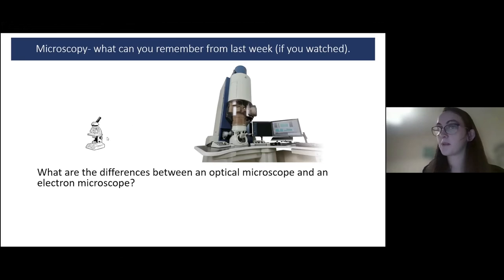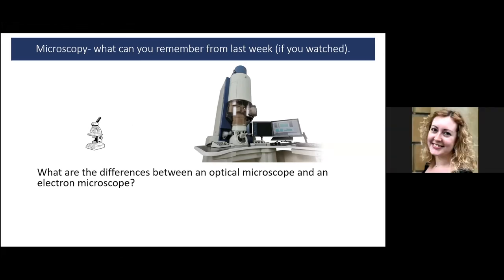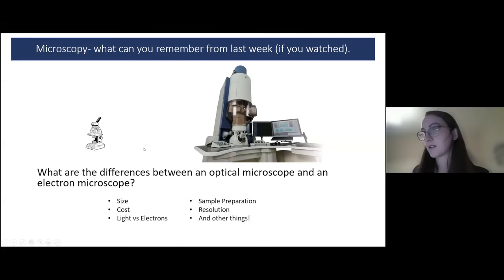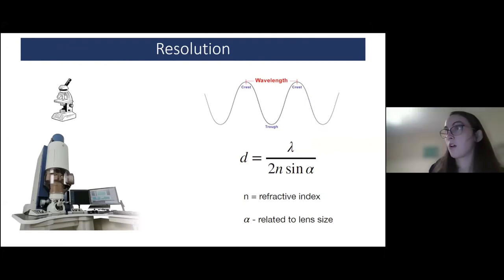So what I've got here is size. As we can see here, cost. One fires light versus electrons. That's quite an obvious one. So one uses light to see things. The electron microscope uses electrons. The type of methods for sample preparation, resolution, and other things like the lenses. That is one. So, the type of lens is different. Okay. So we'll talk, we'll just briefly mention resolution, because this is the most important one for our application and why the resolution of the electron microscope is much better than that of the optical microscope.